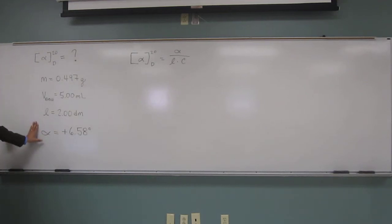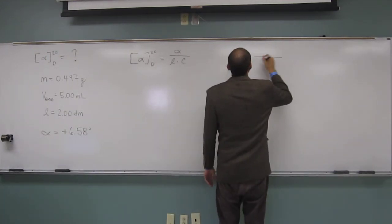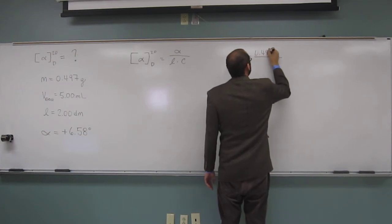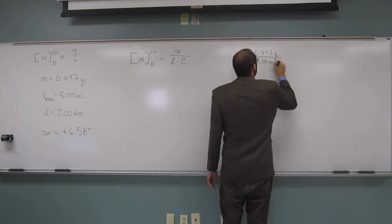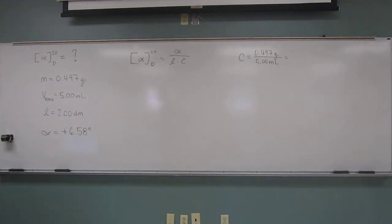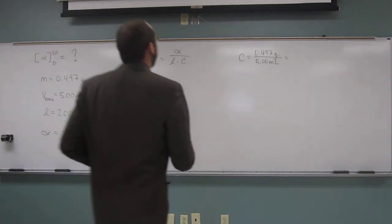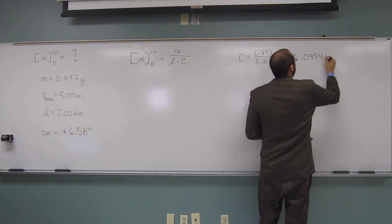We've got pathlength, we've got observed, but we don't have concentration, right? So we've got to figure that out first. Concentration is going to equal the mass, 0.497 grams, divided by 5.00 mils. Yeah, it's going to be something like that. I'll bet you that's the right answer: 0.0994 grams per mil.